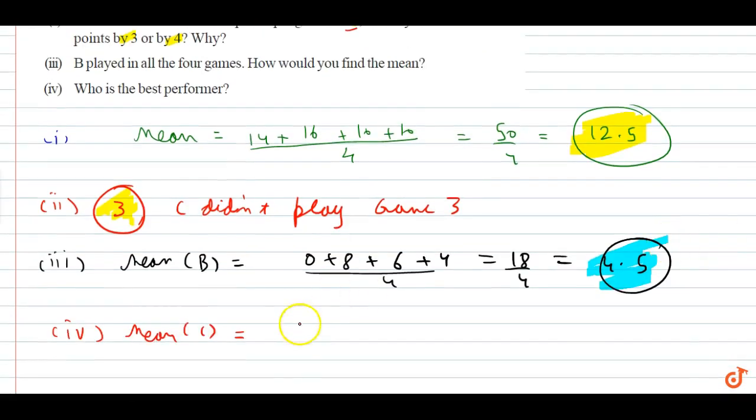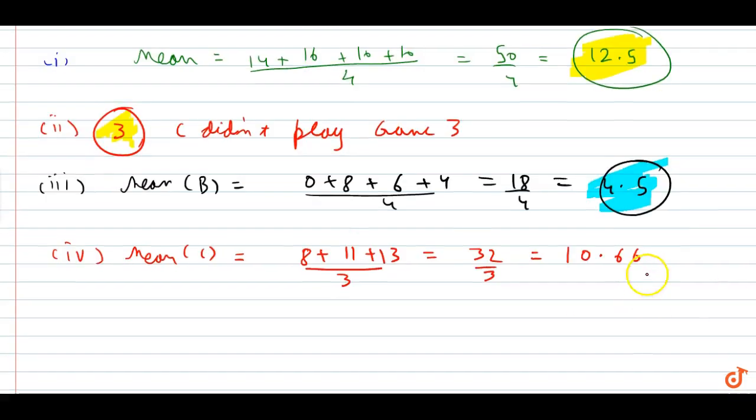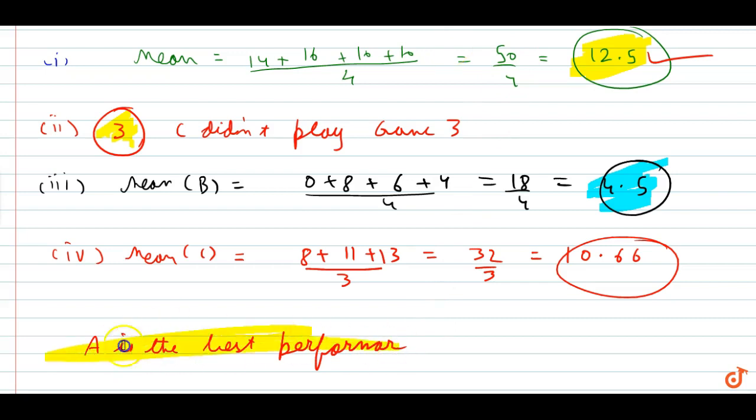8 plus 11 plus 13, upon 3. What is it? 24, 32 by 3, and 10.66. So mean or average, who has the highest? A. So A is the best performer. A is the best performer. Why? Because its mean is highest among the three.